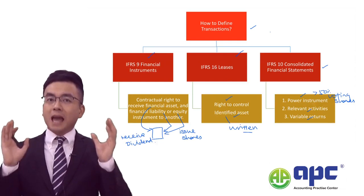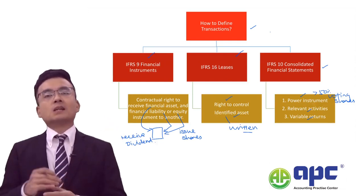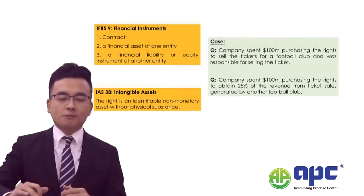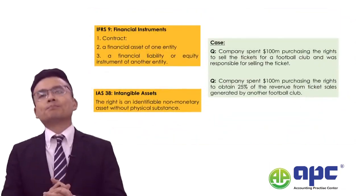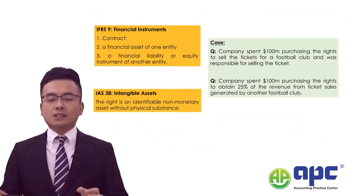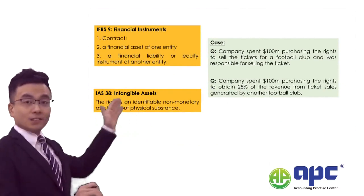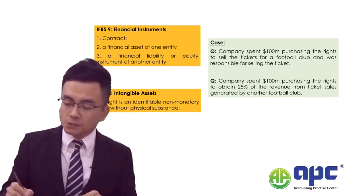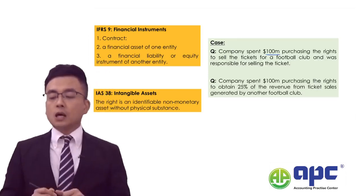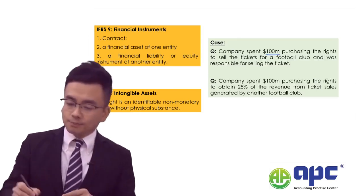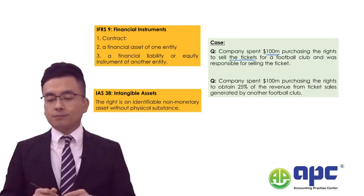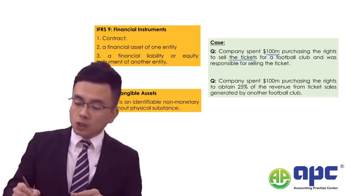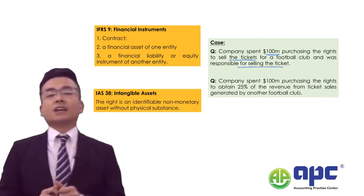But how will the SBR examining team be examining these topics? Let's see the first example. The company spent $100 million purchasing the right to sell tickets for a football club and was responsible for selling the ticket.